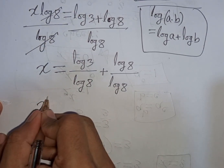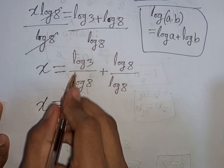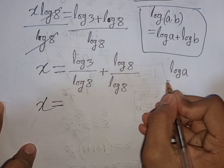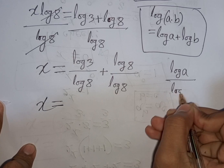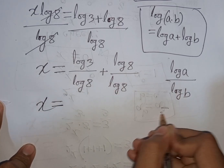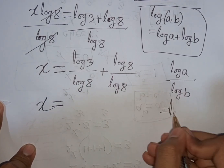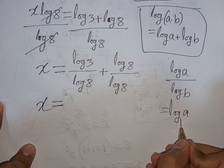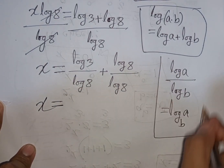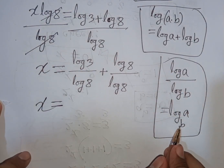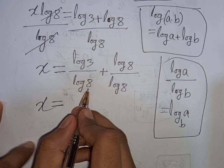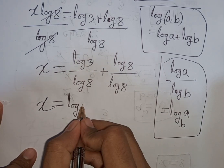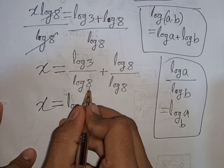We can write x is equal to — here we apply the formula that log a over log b is equal to log a base b. So according to this formula, log 3 divided by log 8 means it will be log 3 base 8.